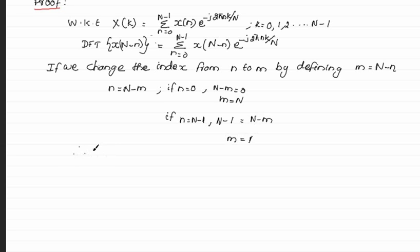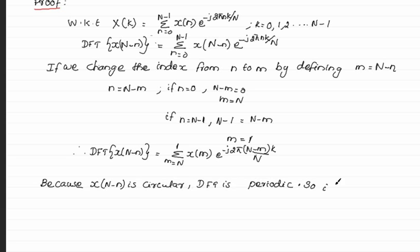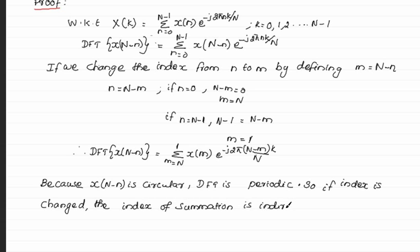Therefore, DFT of x(N-n) is given by a summation with index m running from N to 1, with x(m) times e to the power minus j 2π(N-m)k/N. Because the DFT is periodic, if you change the index of summation, taking m from 1 to N is also equivalent to taking m from 0 to N minus 1.